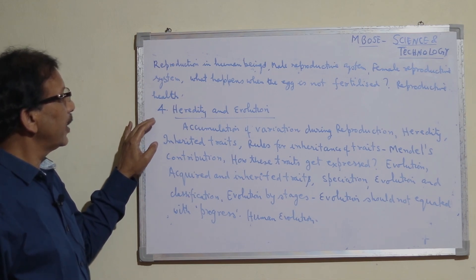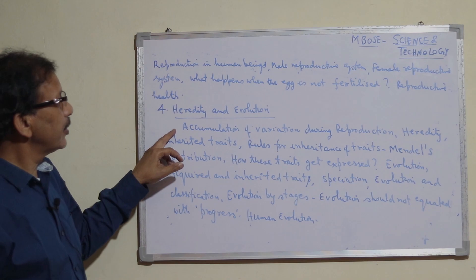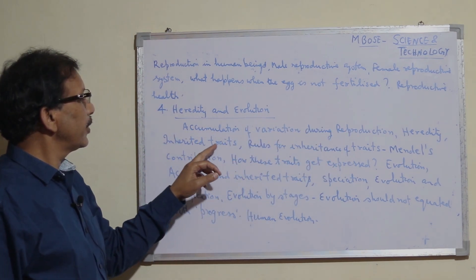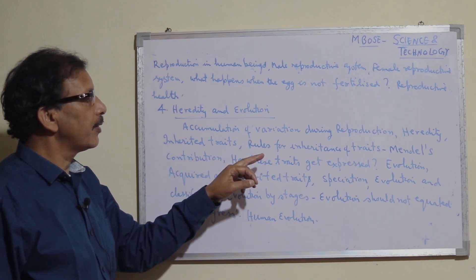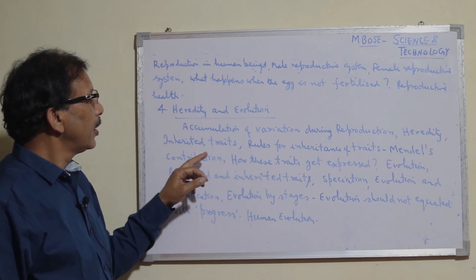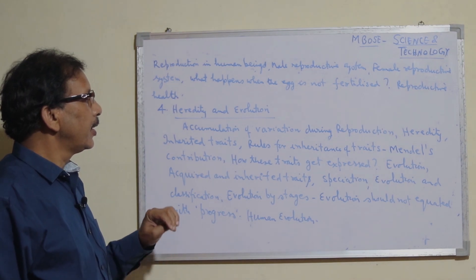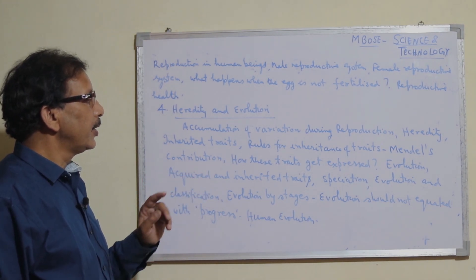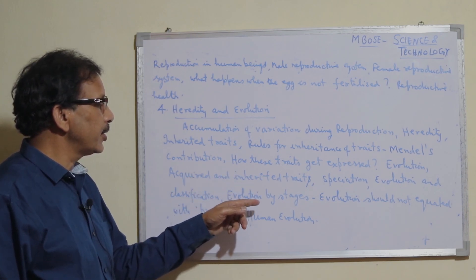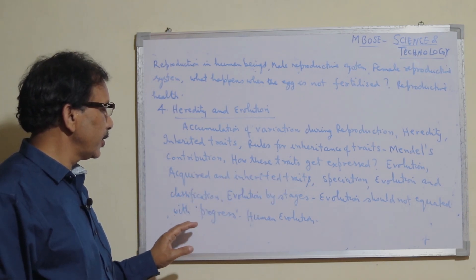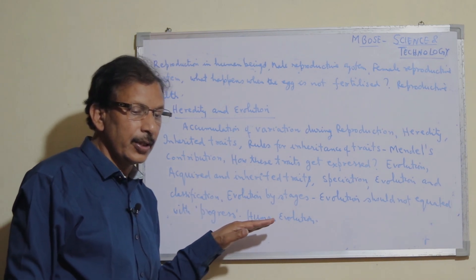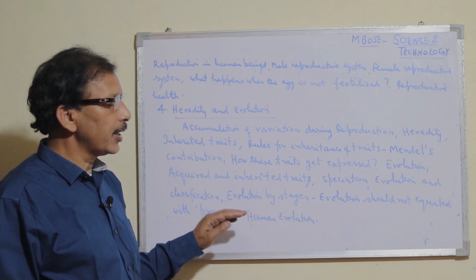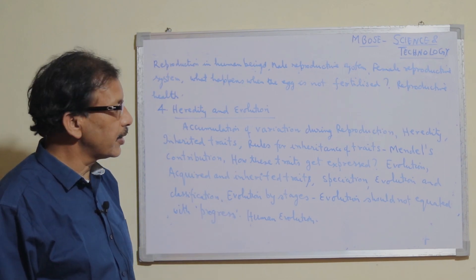The last chapter is heredity and evolution, covering accumulation of variation during reproduction, heredity, inherited traits, rules for inheritance of traits, Mendel's contribution, how traits get expressed, evolution, acquired and inherited traits, speciation, evolution and classification, evolution by stages, and evolution should not equate with progress in human evolution. This concludes the syllabus of Class 10 Science and Technology.